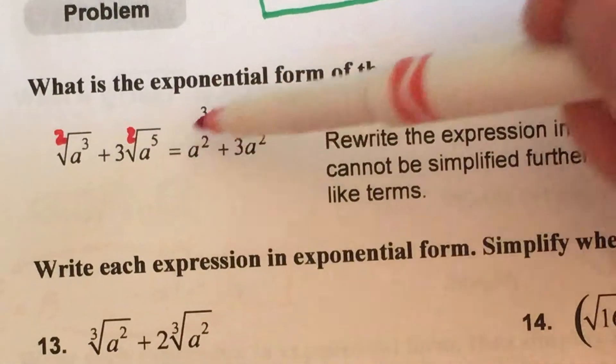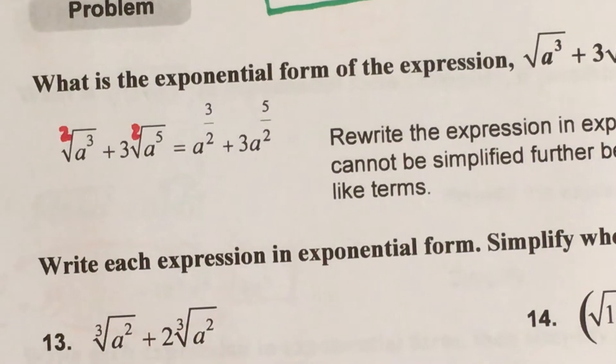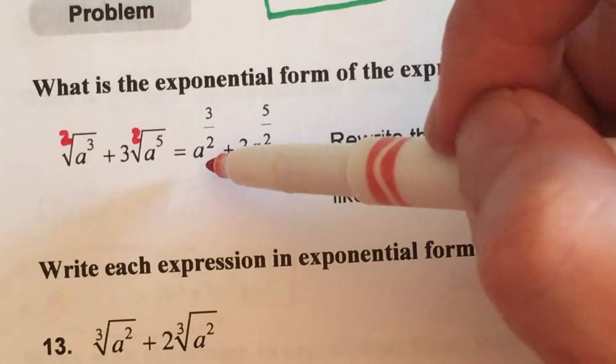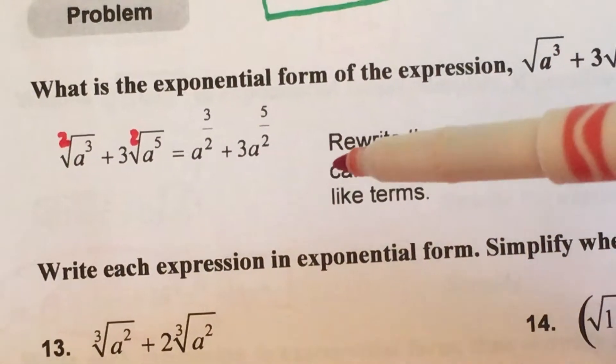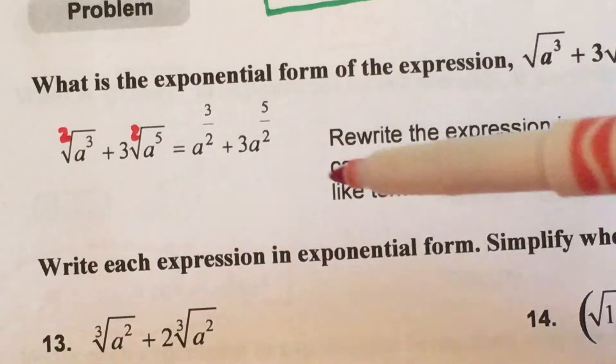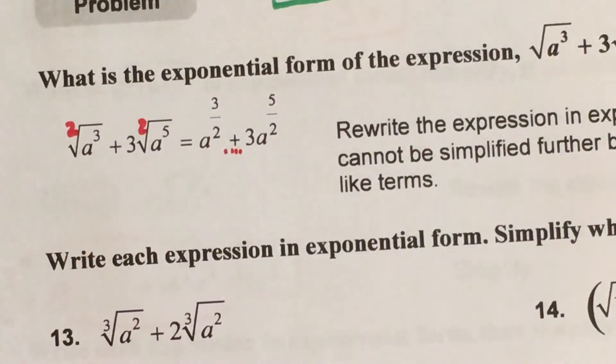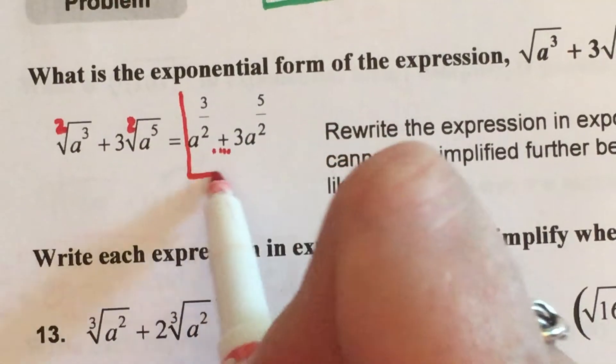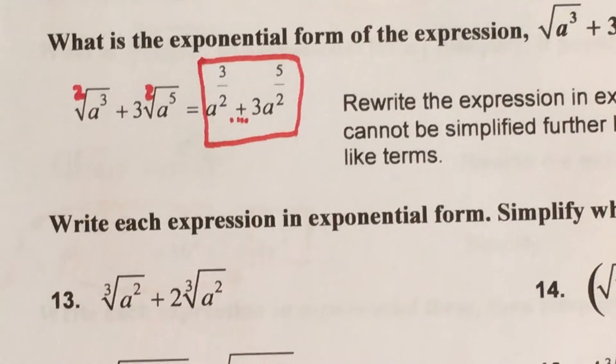In order to merge these two a's together to make one term as a final answer your exponents must be identical. These are not. So because we are adding we can take this particular example no further. That is all we can do.